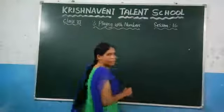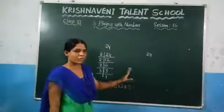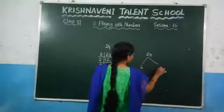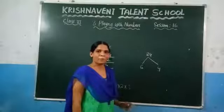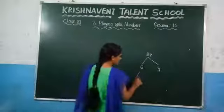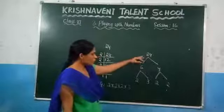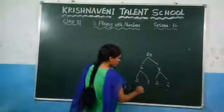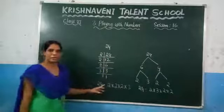The factor tree method works differently. If you take any number, you just need to write it as a product of two numbers — there is no need for them to be prime. So you can write 24 as 6 × 4. Then you follow this procedure until all numbers are prime. Since 6 is not prime, write it as 2 × 3. And 4 can be written as 2 × 2. So we have written 24 by using the factor tree method as a product of the prime factors: 2 × 3 × 2 × 2.